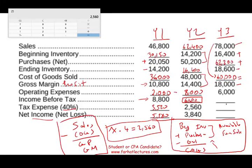I have gross margin and operating expenses, so gross margin minus operating expenses gives income before taxes of 12,000. I pay 40% taxes on 12,000, which is 4,800. Deducting taxes from income before taxes gives net income of 7,200. Notice how we completed this puzzle by knowing how to fill in all the information.